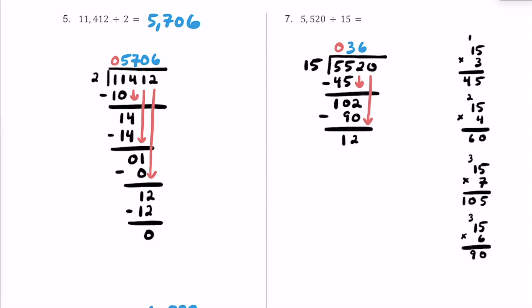Let's bring the 0 down and repeat this process. 15 into 120 — we know 15 times 7 is 105, so we go a little higher. 15 times 8: 8 times 5 is 40, carry the 4; 8 times 1 is 8 plus 4 is 12, so it's exactly 120. We put an 8 up in our quotient. 8 times 15 is 120, so the remainder is 0, and our quotient is 368.